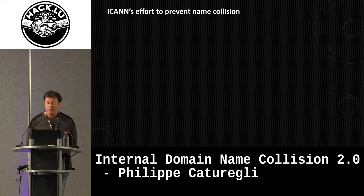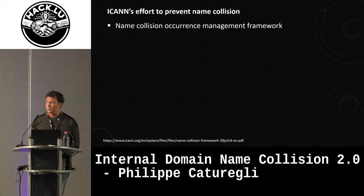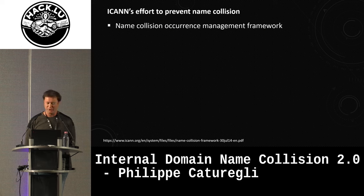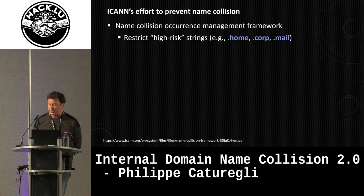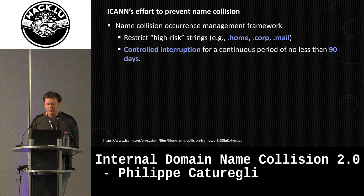You must be wondering — is ICANN doing something to prevent name collision? Of course they are. So in 2013, when they introduced all these GTLDs, they ordered a study that came up with a Name Collision Occurrence Management framework. It suggests first restricting high-risk strings like 'home,' 'corp,' or 'mail' — though variations like 'homes' or 'email' are still fine, and ICANN decided to sell those GTLDs. They also suggested doing a controlled interruption for a continuous period of no less than 90 days.